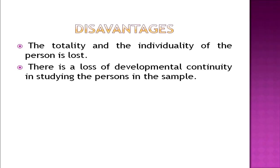However, there are certain disadvantages of the cross-sectional approach. First, the totality and individuality of the person is lost, because we are taking different individuals at different age levels rather than one single individual. Second, there is a loss of developmental continuity — since developmental continuity requires continuous growth in one individual, taking people from different age groups means this continuity is lost.